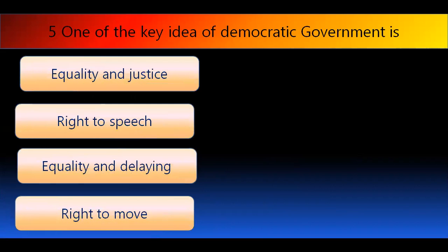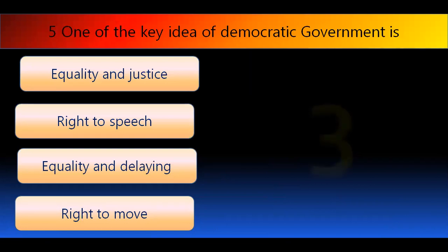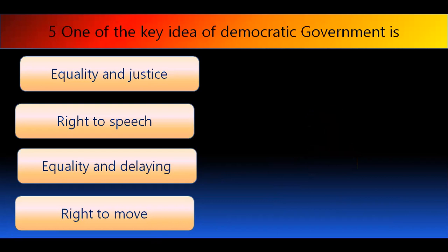Question five on key elements of democratic government. Options include equality and justice, right to speech, equality and delay, right to move, adult franchise, regular elections, free and fair elections, and right to vote. But the basic idea — the key element — is equality and justice.